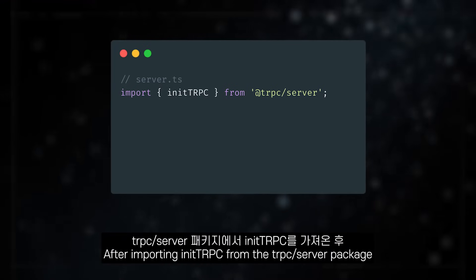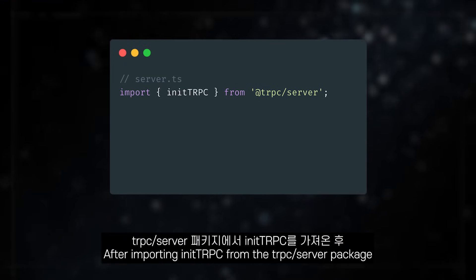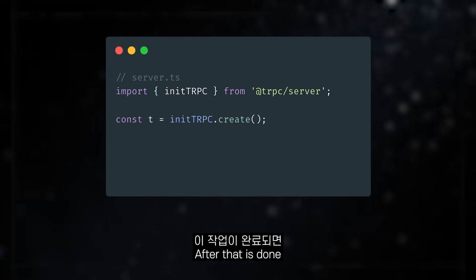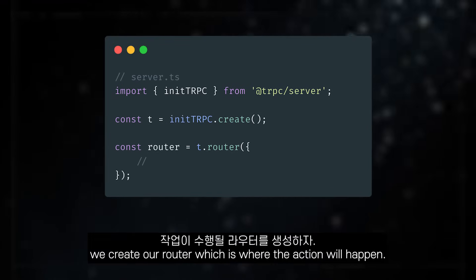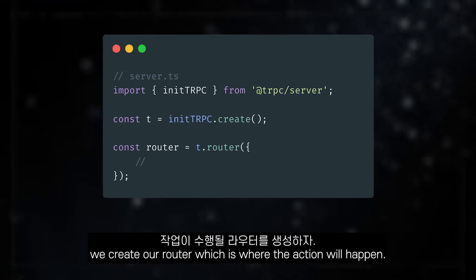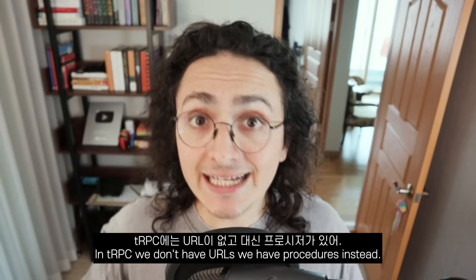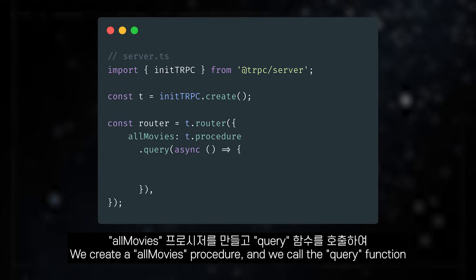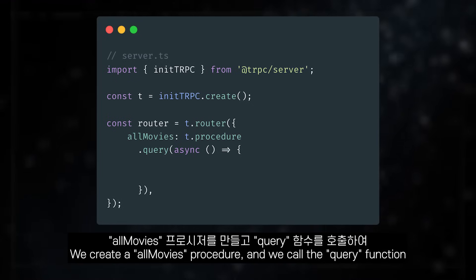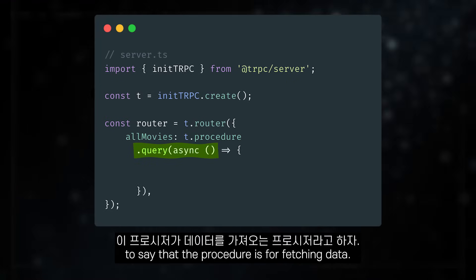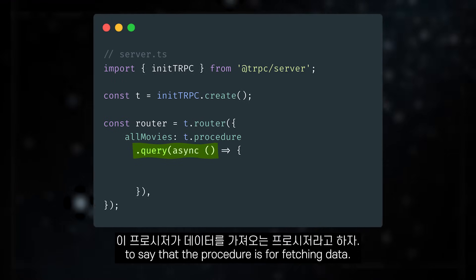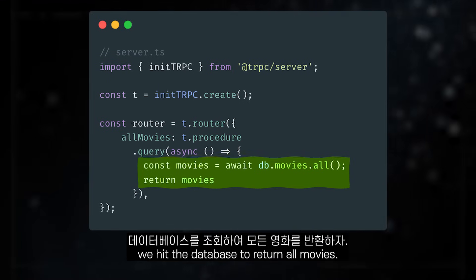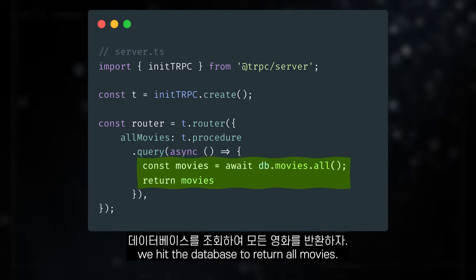After importing initTRPC from the tRPC server package, we run the create function to initialize it. After that is done, we create our router, which is where the action will happen. In tRPC, we don't have URLs — we have procedures instead. We create an allMovies procedure and we call the query function to say that the procedure is for fetching data. Then, inside of the query function, we hit the database to return all movies.